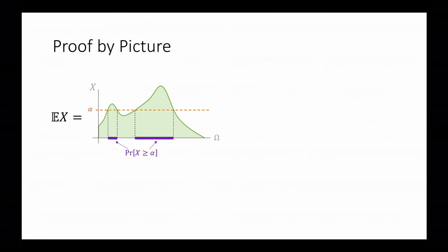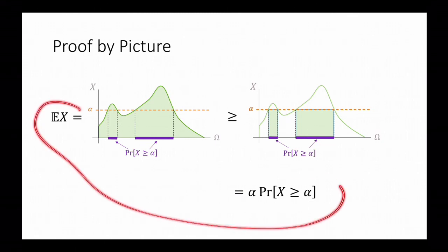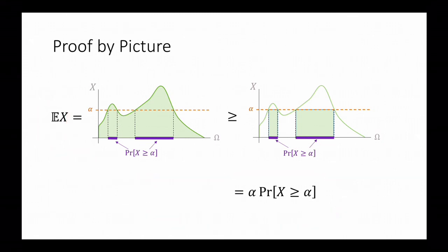In this way of drawing x, the expectation of x is just given by the area under this curve. This area is at least the area of these boxes here, because all I've done is subtract area — and here I'm using the fact that x is non-negative. The area of these boxes is easy to calculate: they have height alpha, and the total width is just the probability that x is greater than or equal to alpha. So the total area is alpha times the probability that x is greater than or equal to alpha. Rearranging this gives us Markov's inequality.